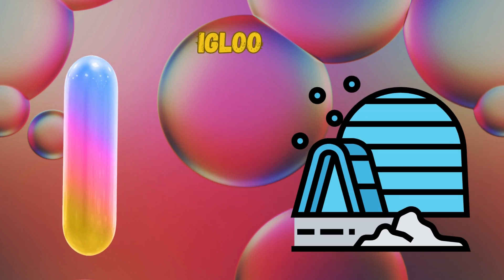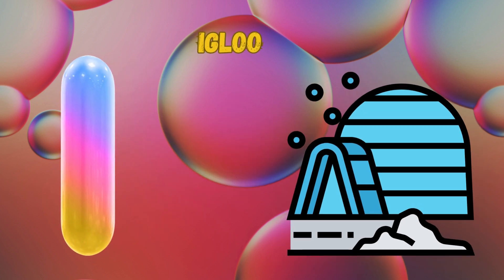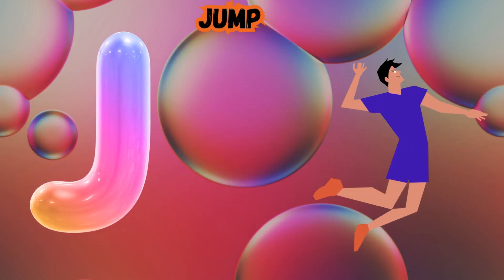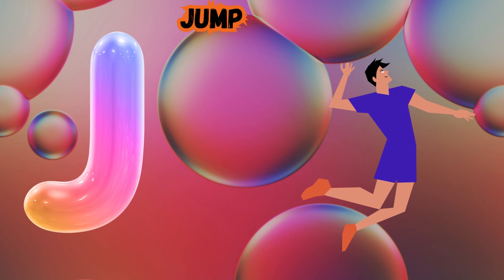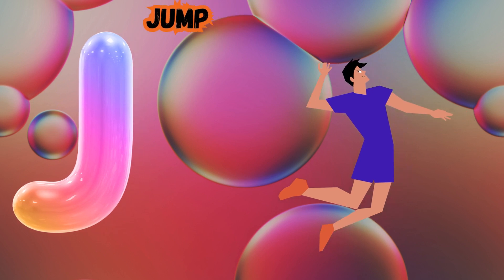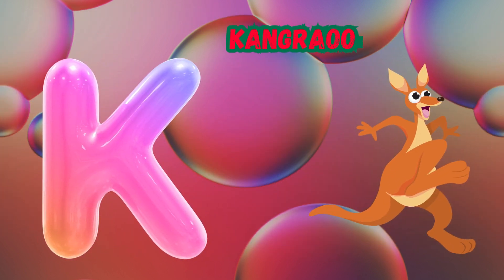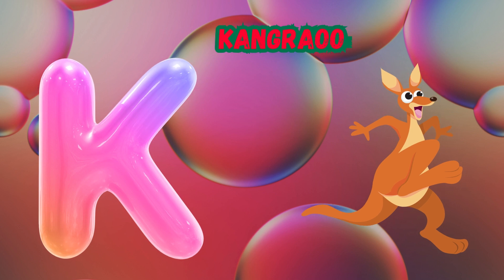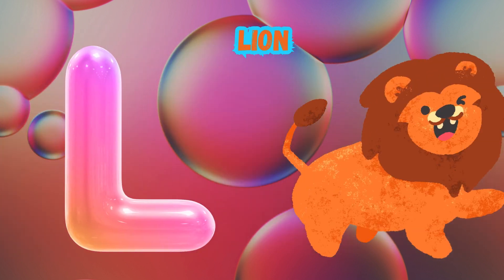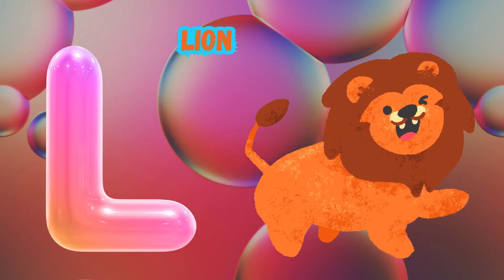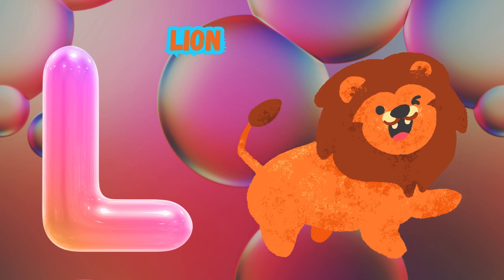I is for Igloo. I-I-Igloo. J is for Jump. J-J-Jump. K is for Kangaroo. K-K-Kangaroo. L is for Lion. L-L-Lion.